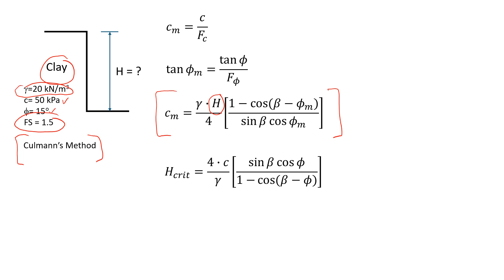In this formula we have mobilized cohesion and mobilized friction angle. We get them using the real cohesion and factor of safety. This is factor of safety related to cohesion and factor of safety related to friction angle. Typically they're the same - in our case 1.5. Now let's see how we're going to estimate H. We'll start with mobilized cohesion.